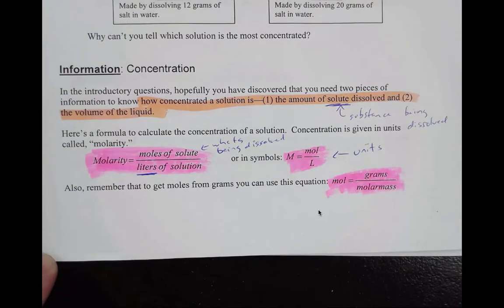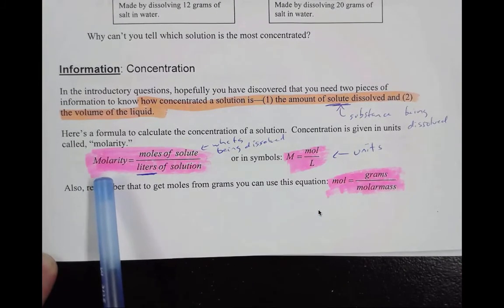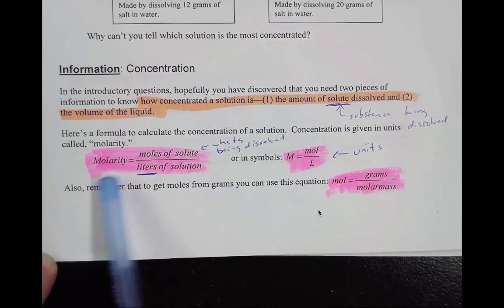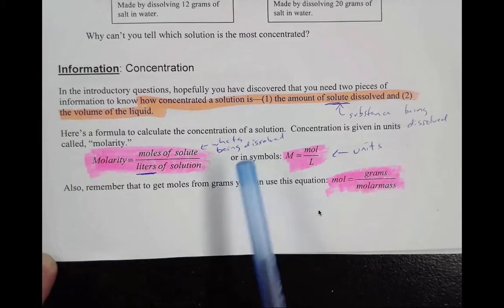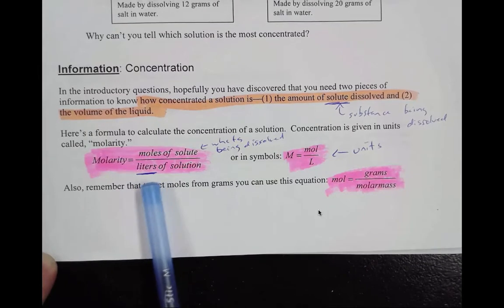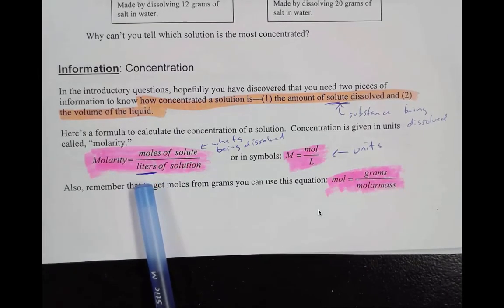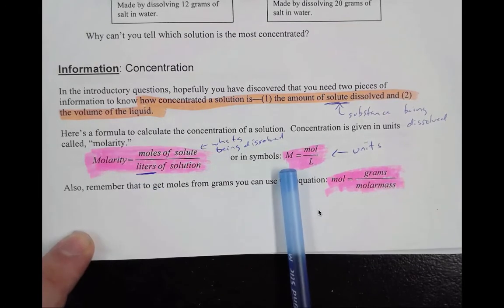So then next, we have some formulas that we need to know. The first formula is we're starting to look at molarity. Molarity is equal to the moles of solute—remember, moles of solute is what's being dissolved—over liters of solution. Remember guys, it does have to be in liters, so we will be converting to liters whenever we aren't in liters.